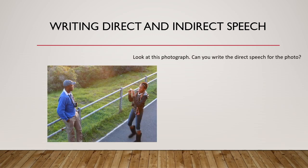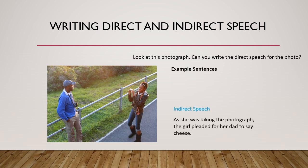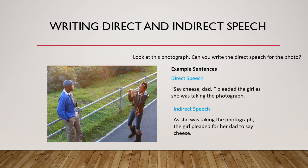Here's another photograph. This time I want you to write the direct speech for the photo. This is my indirect speech: As she was taking the photograph, the girl pleaded for her dad to say cheese. Pause the video again and have a go at changing that indirect speech to direct speech. Remember, you must use inverted commas when writing direct speech. Here's the direct speech: "Say cheese, Dad," pleaded the girl as she was taking the photograph. Hopefully you included those inverted commas and the correct punctuation. You can also see there's a reporting clause after the speech has ended.